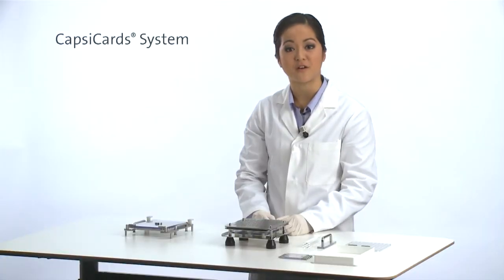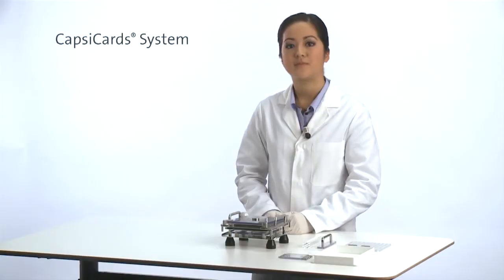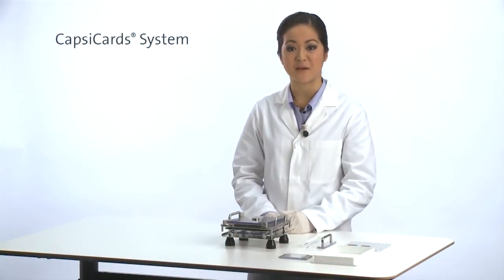Then place the caps tray on top of body sheet C. You now have a fully assembled CapsiCards machine.